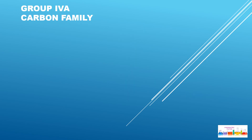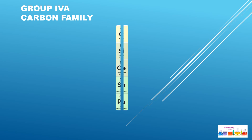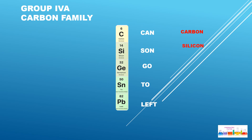Group 4A: Carbon family. We need to learn the sentence: 'Can Sun Go To Left.' Can is for Carbon, Sun is for Silicon, Go is for Germanium, To is for Tin (Latin name: Stannum), Left is for Lead (Latin name: Plumbum).